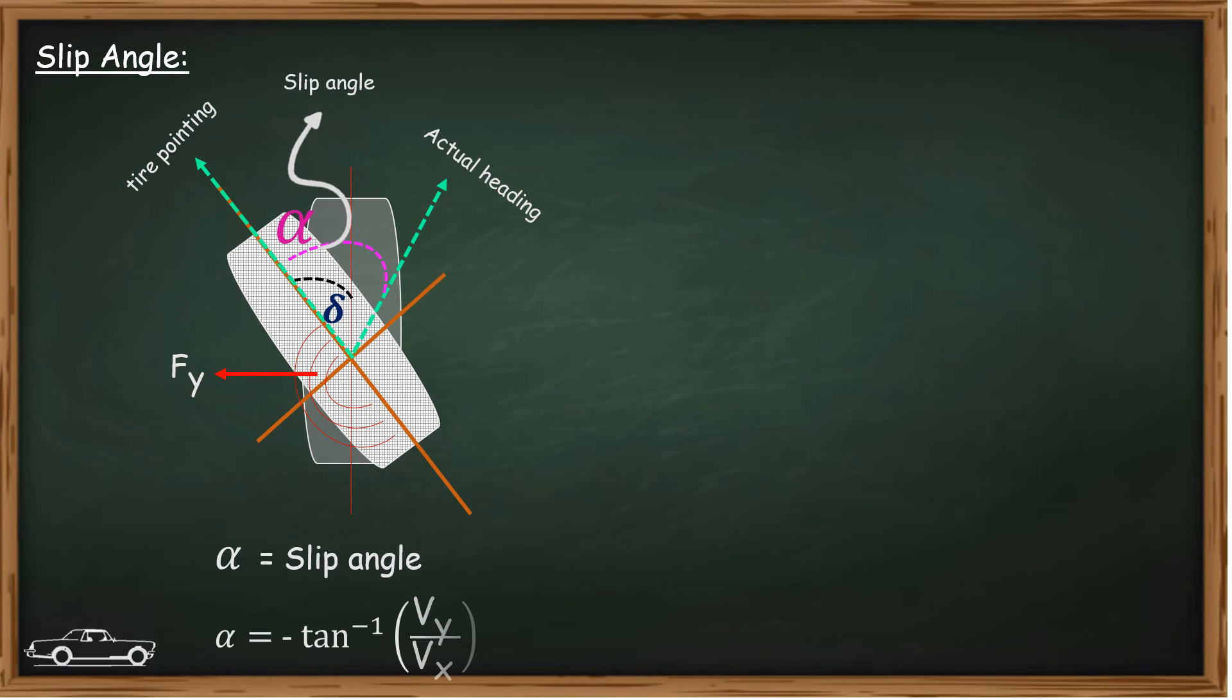Mathematically, it can be stated as the arctan of lateral velocity vector by longitudinal velocity vector.